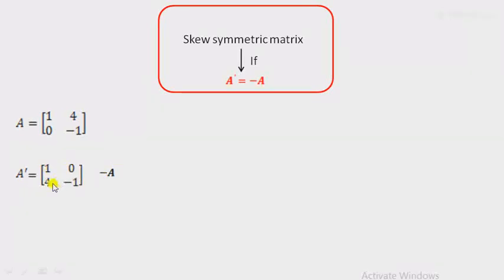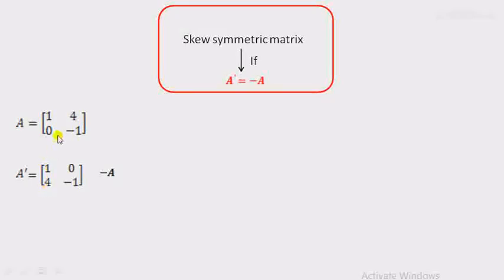A' means the transpose of the given matrix A. Transpose means interchanging rows and columns. The elements 1, 4 which are in row form are written in column form as 1, 4. Similarly, 0, minus 1 in row form becomes the column 0, minus 1.